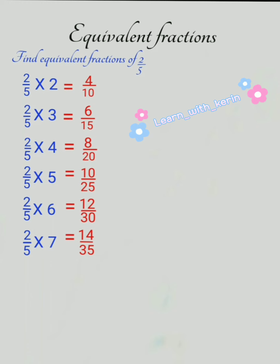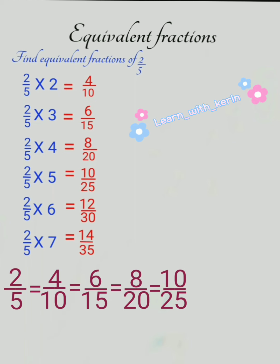2 by 5 is equal to 4 by 10 is equal to 6 by 15 is equal to 8 by 20 is equal to 10 by 25 is equal to 12 by 30 is equal to 14 by 35.